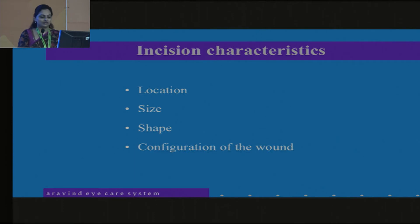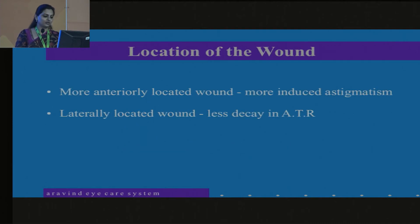And coming to the incision, you have to decide on the location, the size, shape and the configuration of the wound. So location, as I already mentioned, using the keratometry, we can decide on whether to have a superior or a temporal incision. Temporal incision is supposed to be good. But one disadvantage with temporal incision is you need to make sure your wound integrity is good. And also, you make sure that you close it with the conjunctiva well.